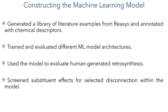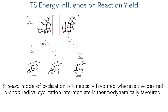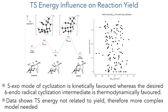In the first step of their computational investigations, they looked at the influence of transition state energy on reaction yield. Their model compound could undergo a radical cyclisation through either a 6-endo or 5-exo mechanism. In general, the 5-exo mode is kinetically favoured, whereas the 6-endo mode is thermodynamically favoured, as predicted by Beckwith's rules. However, by looking at the library of reactions taken from Reaxys and comparing the reported yield with the calculated transition state energies, they could see that there was no direct correlation. Therefore, a more complex model would need to be generated.